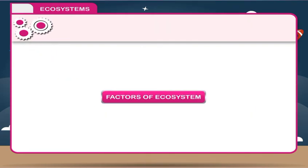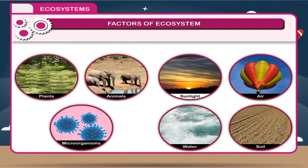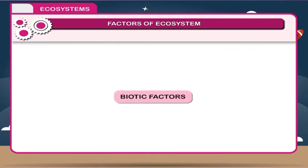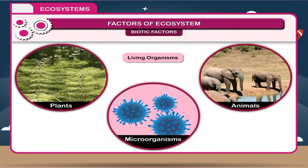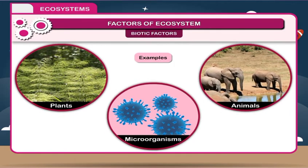Factors of Ecosystem. An ecosystem consists of two factors or components: A. Biotic and B. Abiotic. Biotic Factors: The living organisms are called biotic components or living components of the ecosystem. Examples include plants, animals, and microorganisms.